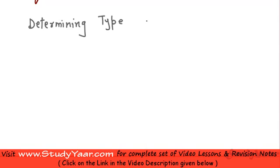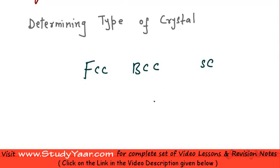So basically it is a very complex method and we are going to learn only about how to distinguish between an FCC or a BCC or a simple cubic lattice. So given a crystal, how can you find out whether it is one of these three?